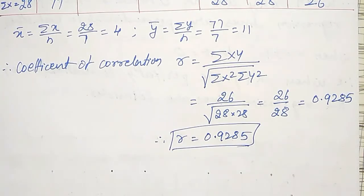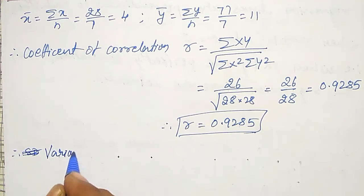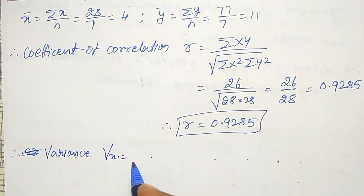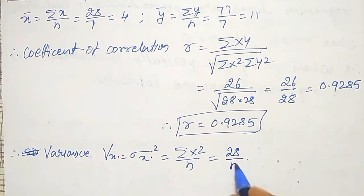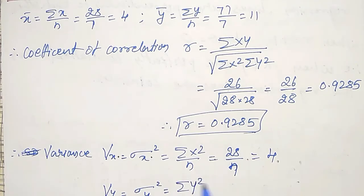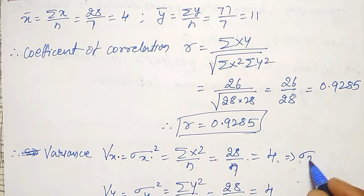Using this r, I have to calculate the regression lines. To find the regression lines, I need b_xy and b_yx, for which σx and σy are required. The variance of X: σx squared equals summation X squared divided by n = 28 divided by 7 = 4. Similarly, the variance of Y: σy squared equals summation Y squared divided by n = 28 divided by 7 = 4. Therefore σx equals square root of 4 = 2, and σy equals square root of 4 = 2.